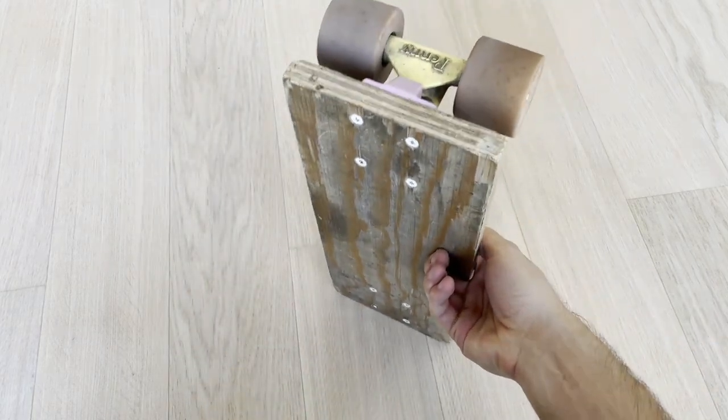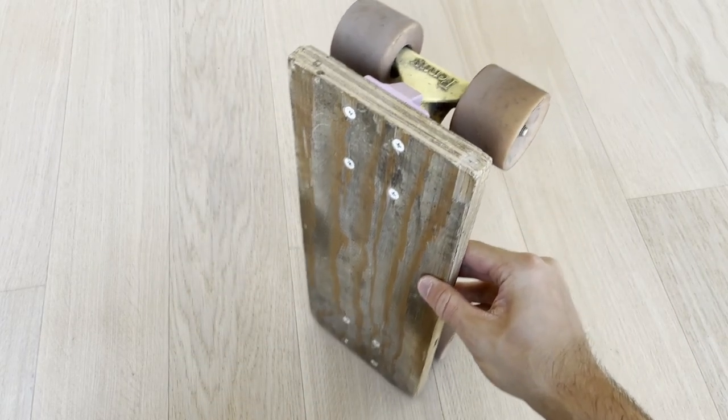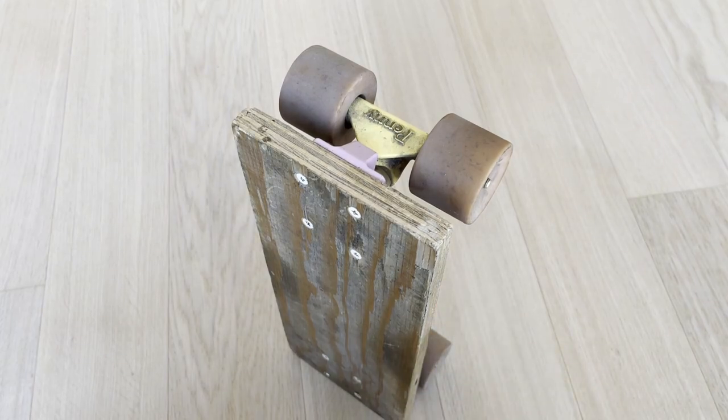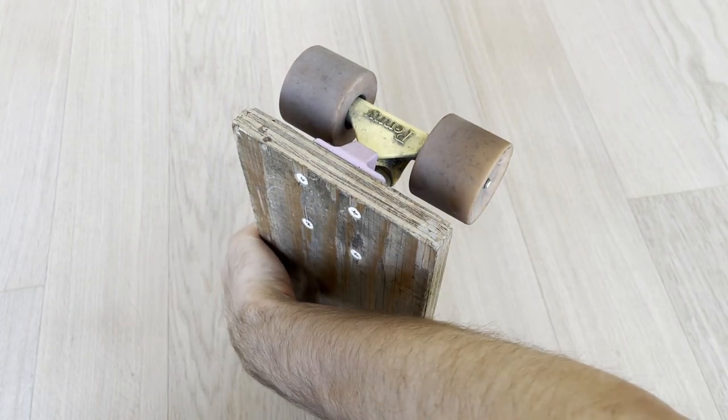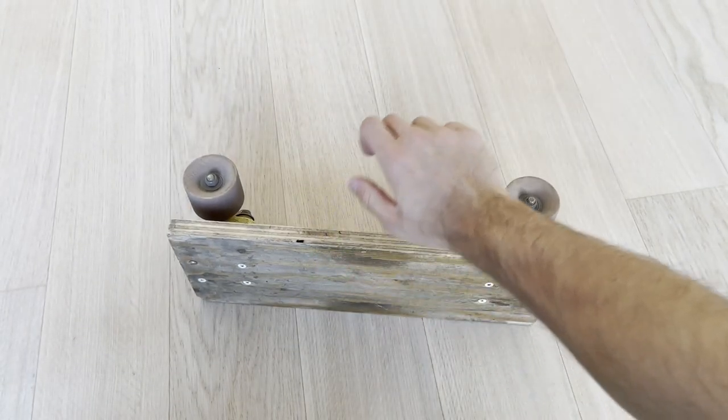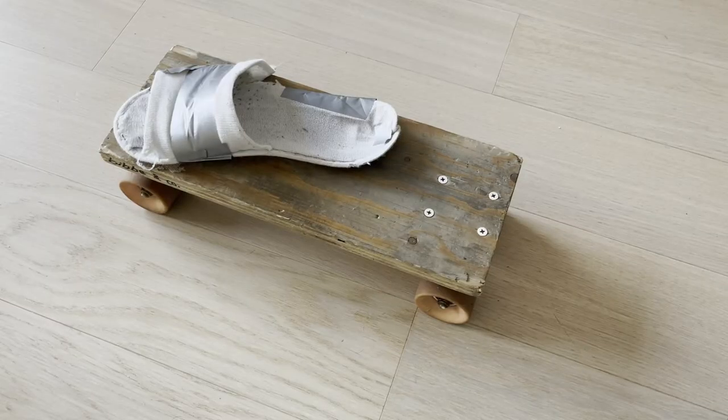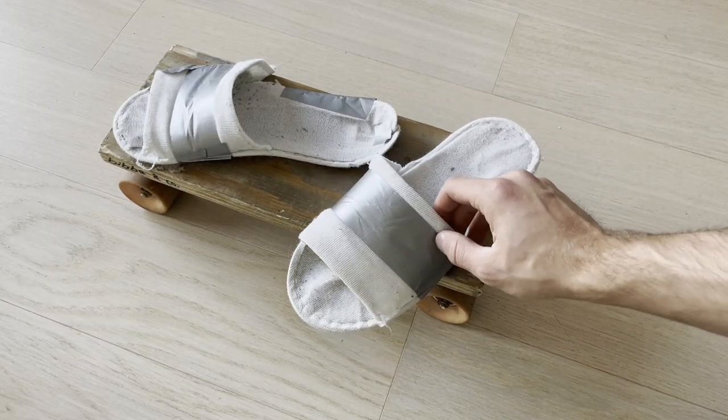It also means the width of the board is 15.3 cm, the same as the trucks and wheels. It's 40 cm long, which is about enough for me to be able to have both feet on the board when riding.